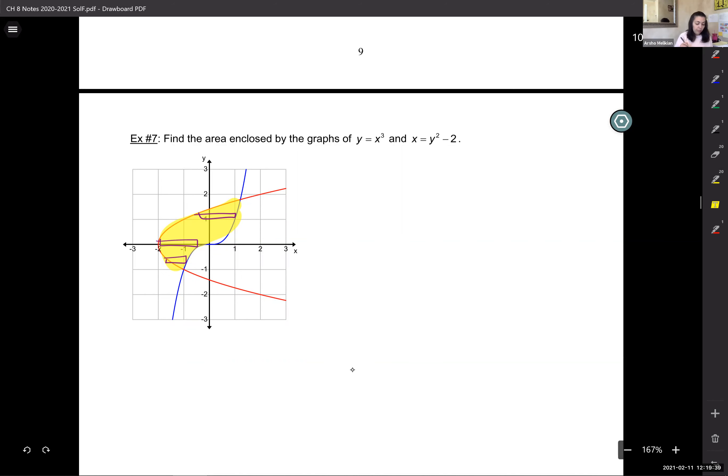I love this stuff so much. Like, I really do. So look at the functions here. I have y equals x cubed. That's this blue one, right? Always label your functions. And if I'm going to do this with respect to y, I have to solve it for x. So x is cube root of y. The red function is a sideways parabola, y squared minus 2. So if x is y squared minus 2, that's already solved for x. I can just use it as is.